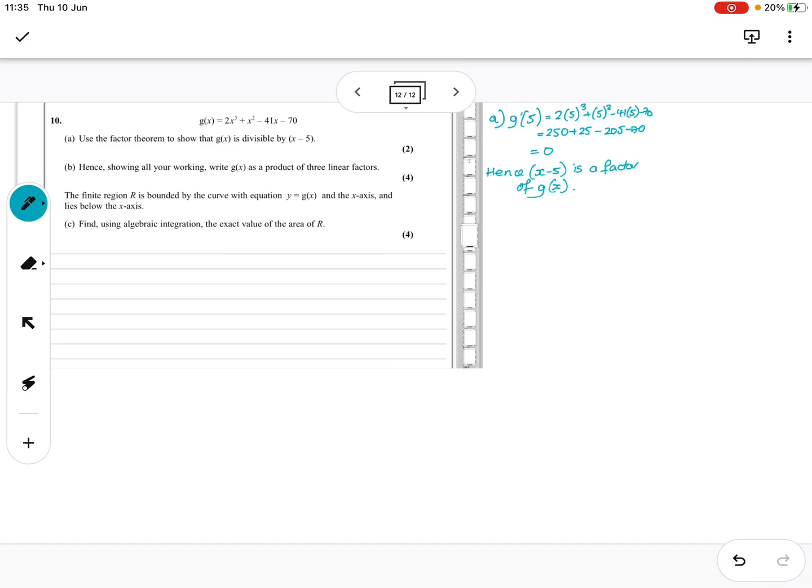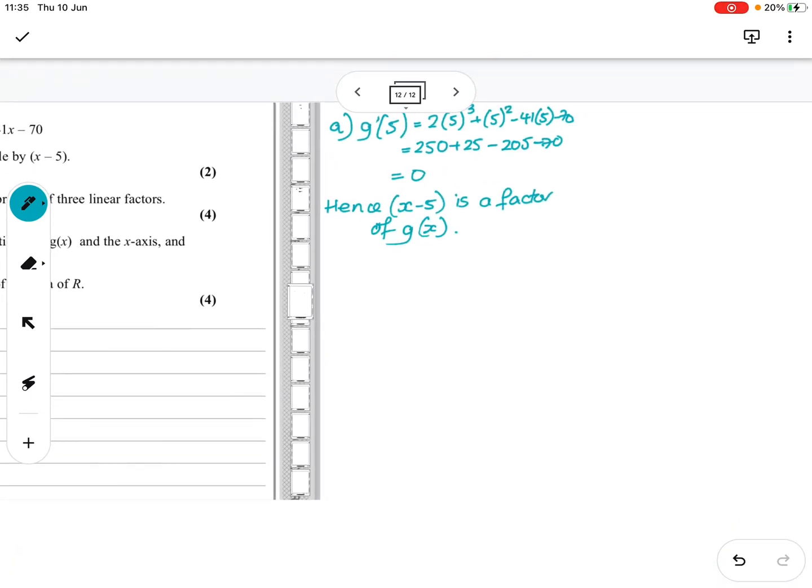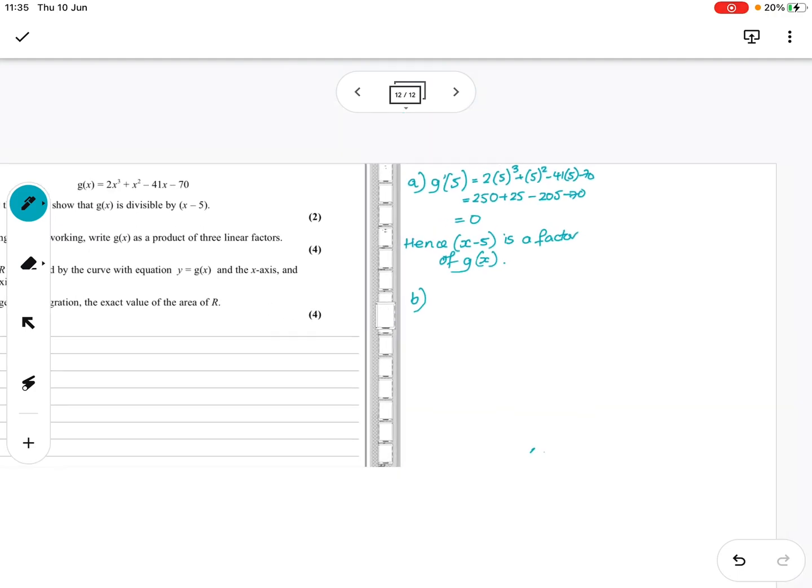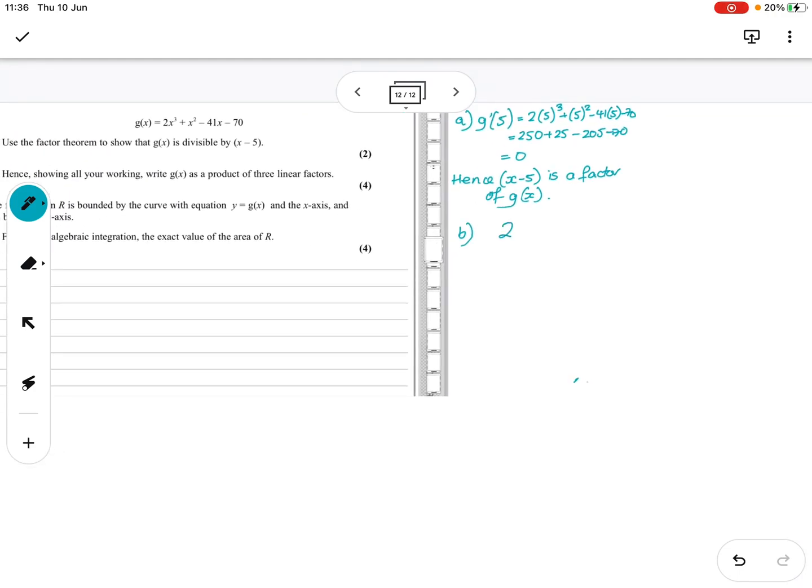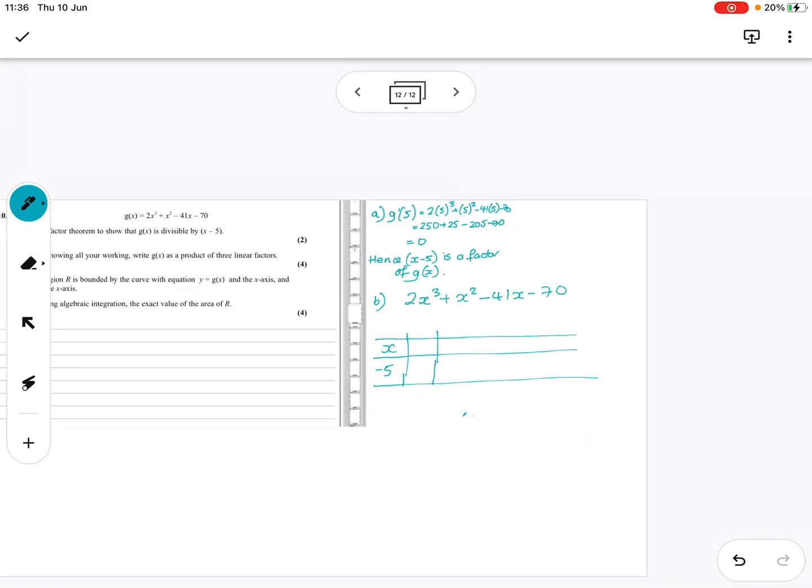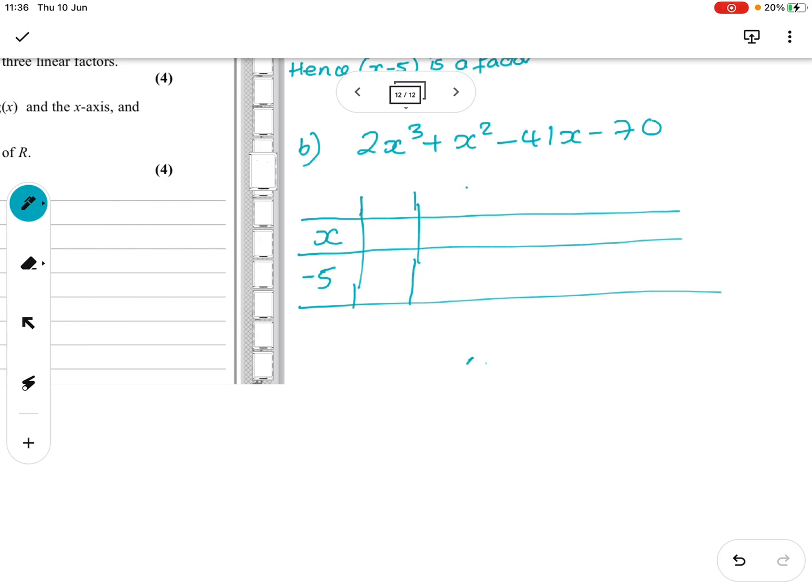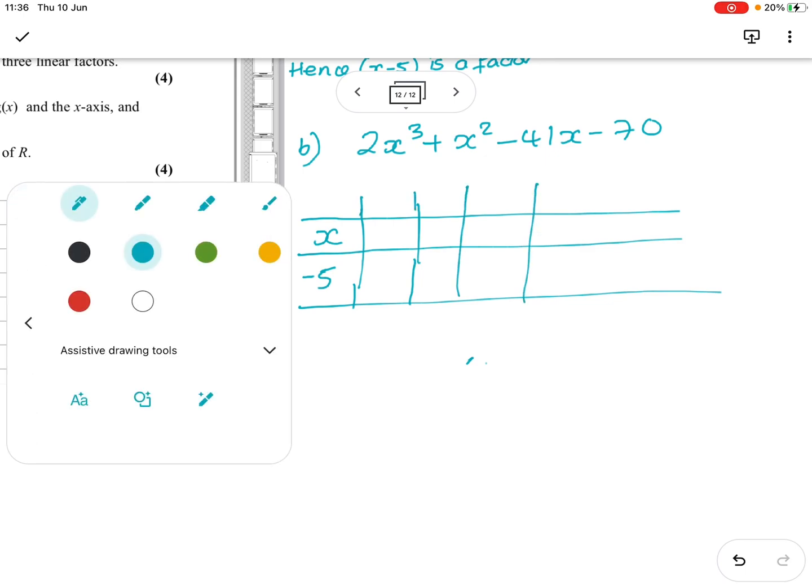Hence, show all your working and write as a product of three linear factors. To make this a product of three linear factors, I'm going to do a division. I don't generally do the classic division, so I'm going to do it slightly differently. So we're going to divide 2x³ + x² - 41x - 70 by x - 5 to see if it's a factor. Well, we know it's a factor, so there shouldn't be any remainder.